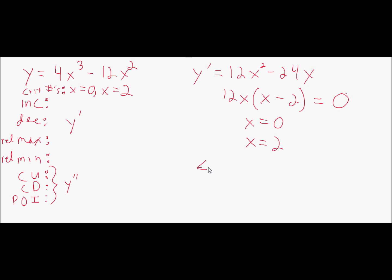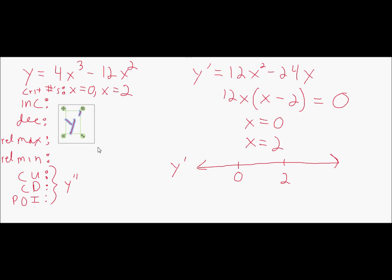Make a number line labeled y prime, and put on zero and two. The derivative is zero at these two points, so in each interval it must be either positive or negative. I'll test a point less than zero, like negative three: 12 times negative three gives negative 36, and negative three minus two is negative five. A negative times a negative is positive, so the function is increasing. Testing one, between zero and two: 12 times negative one is negative, so the function is decreasing. Testing ten, greater than two: 12 times 10 is 120 and 10 minus two is 8 — positive times positive is positive, so the function is increasing.